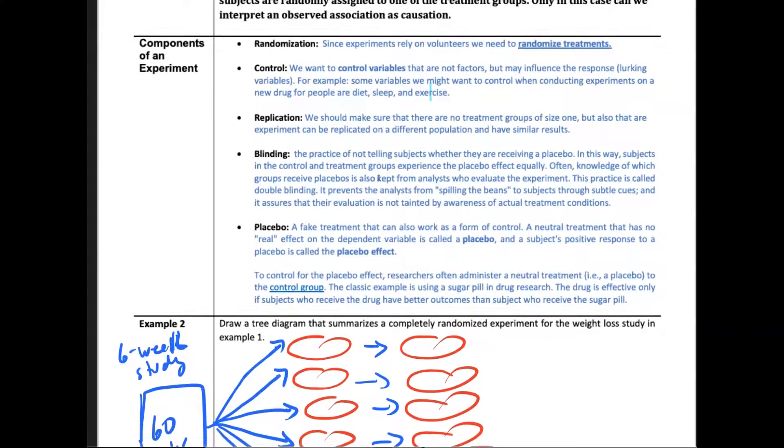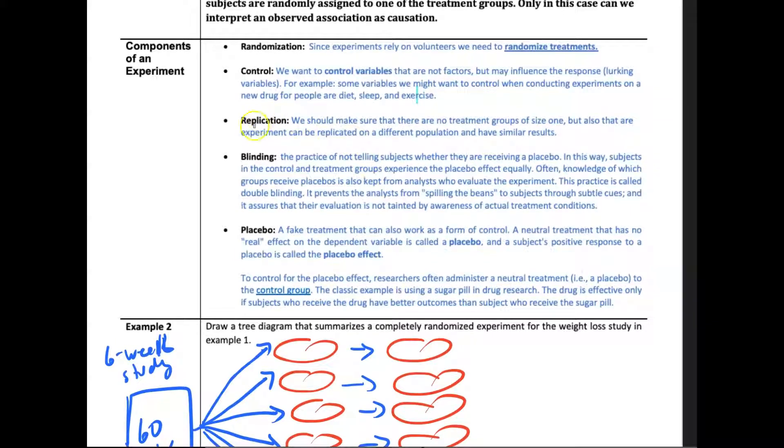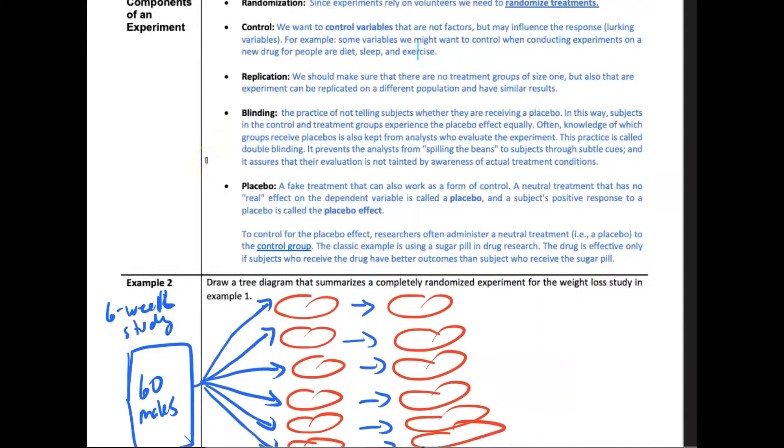Other ideas: replication is this idea that whenever you get results, we want to make sure that we can replicate those results on a different population to see if the results are similar. That's happening with COVID-19 with drugs. You may do the experiment one time and say it works, but you want to be able to replicate, like a vaccine. That's why it takes so long for a vaccine to come through.